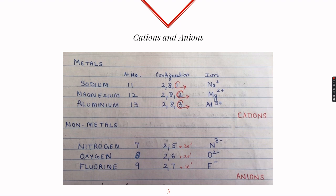To become stable, sodium loses one electron to form an Na⁺ ion. Similarly, magnesium loses two electrons to form an Mg²⁺ ion, and aluminium loses three electrons to form an Al³⁺ ion.